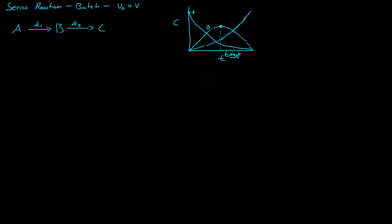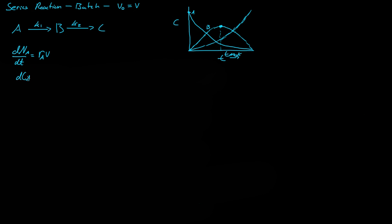We want to find out what T max is — how long we want to leave these chemicals in the batch reactor. To do that, let's do a basic mole balance around A. We know the change in the moles of A with respect to time is equal to the reaction rate of A times the volume. If the volume is constant, we can divide through by V, and since moles divided by volume is concentration, we get dC_A over dt is equal to r_A.